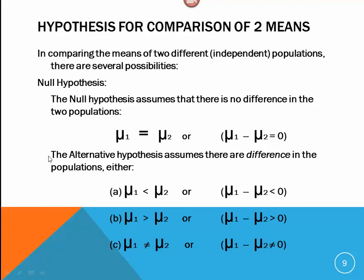The alternative hypothesis assumes that there are differences in the populations. And so, we choose from either A, where the first group is less than the second group, B, the first group is greater than the second group, or just C, that they're different. And, of course, we build these based on the wording of the question.